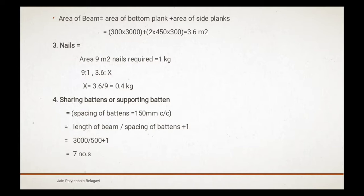Third, nails: area 9 m² nails required = 1 kg. We got the area of beam is 3.6 m². So 3.6 m² nails required: 3.6/9 = 0.4 kg. X = 3.6/9 = 0.4 kg.